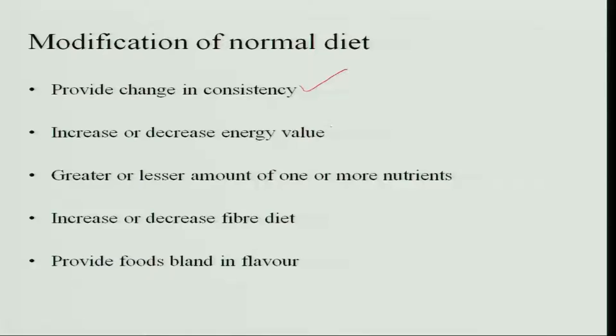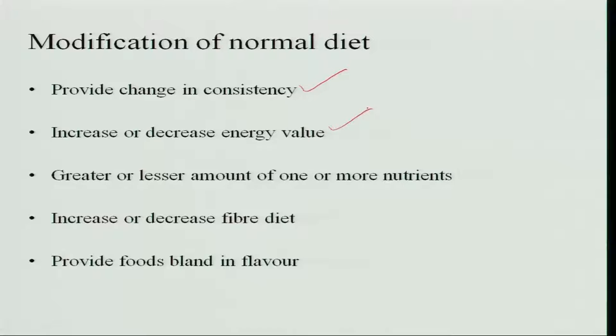You also consider increasing or decreasing the energy value. If the person cannot tolerate high-energy foods, you increase or decrease the energy value depending on the patient's condition. If the person needs to reduce weight, decrease the energy value. If the individual has diarrhea, reduce energy and slowly increase the diet. When the person is undernourished, increase the energy value.